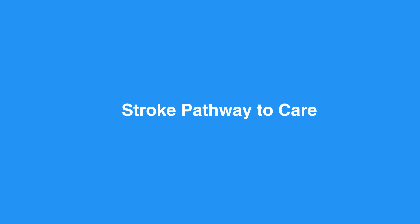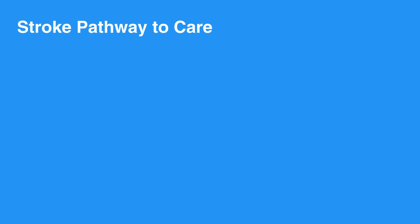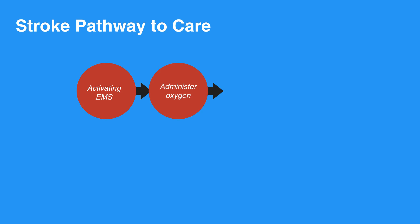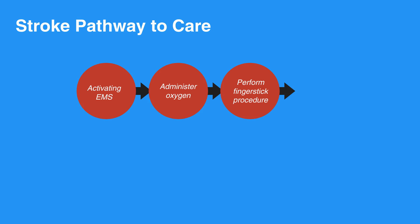To care for an individual with a stroke, proceed with this pathway. Start with activating EMS. Administer oxygen using 4 liters per minute of nasal cannula and titrate as needed to keep oxygen saturation at 94 to 99%. Perform a finger stick procedure to check glucose, as hypoglycemia can mimic acute stroke.